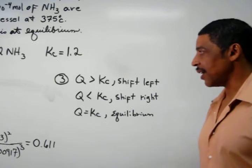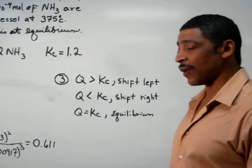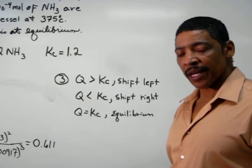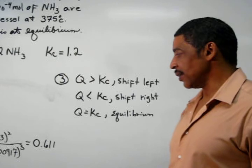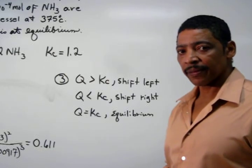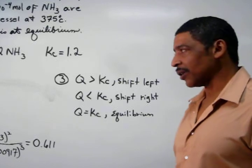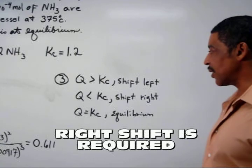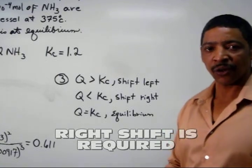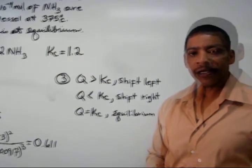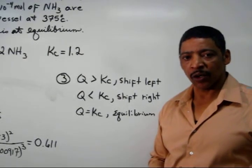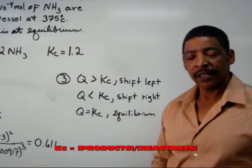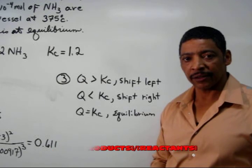In this case, the Kc value for this reaction was found to be 1.2, but the reaction quotient calculated was found to be 0.611. Since 0.611 is clearly less than the Kc value, the reaction must shift to the right in order to reach equilibrium. In other words, before this reaction will reach equilibrium, the concentration of the products must increase and the concentration of the reactants must decrease.